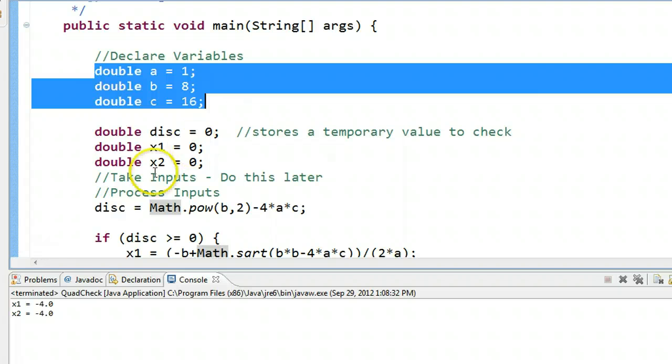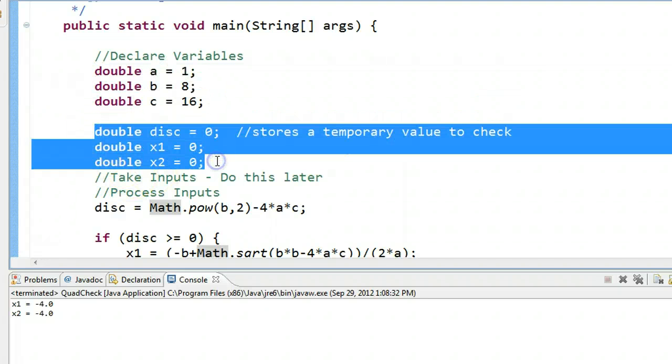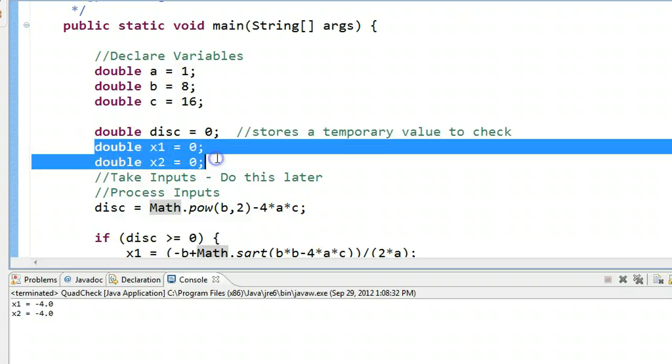So I declare three variables, double A, B, C. I declare another three variables, one which stores a temporary variable, and the other that stores x1 and x2.